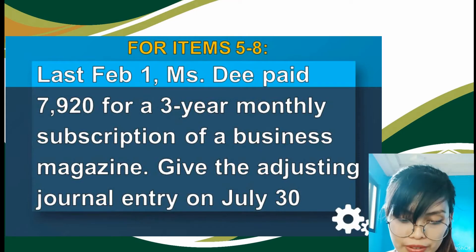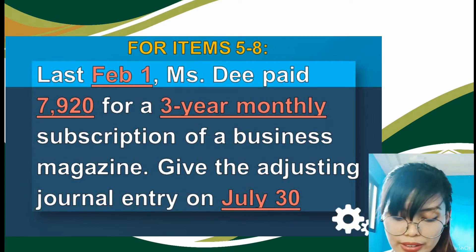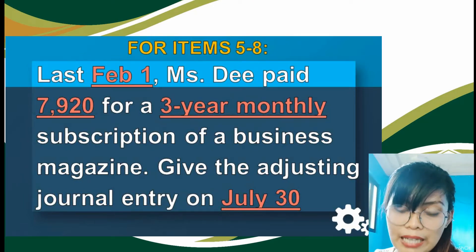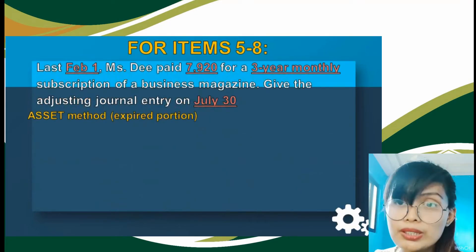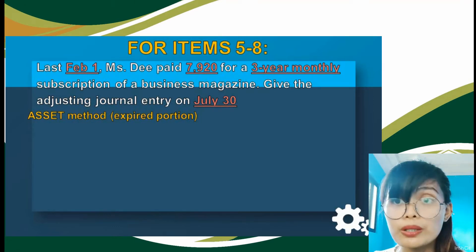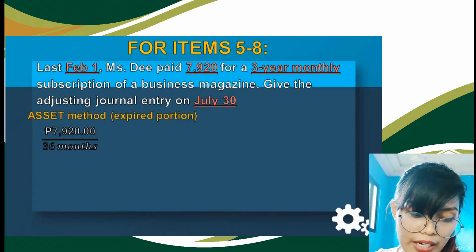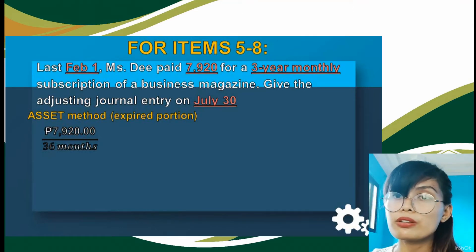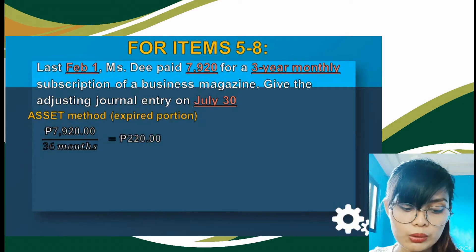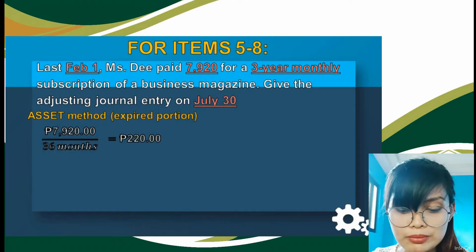For the second transaction: last February 1st, MISD paid P7,920 for a 3-year monthly subscription of a business magazine. Give the adjusting journal entry on July 30. MISD availed a subscription valid for 3 years. Applying the asset method, we first find the monthly payment: P7,920 divided by 36 months equals P220 per month.